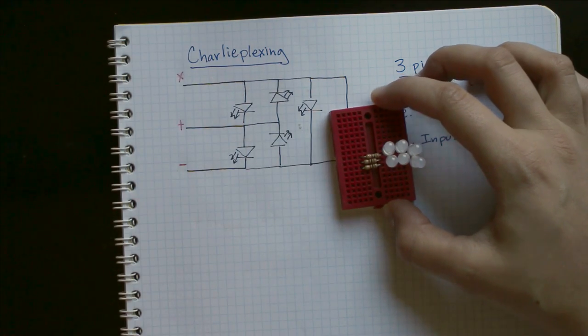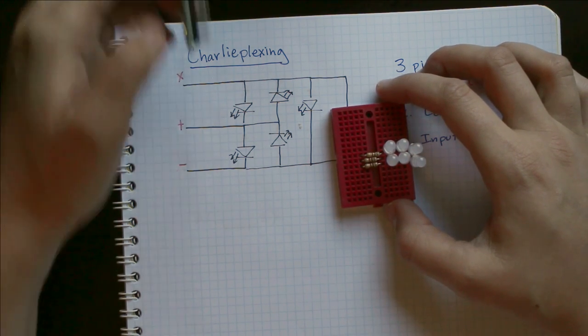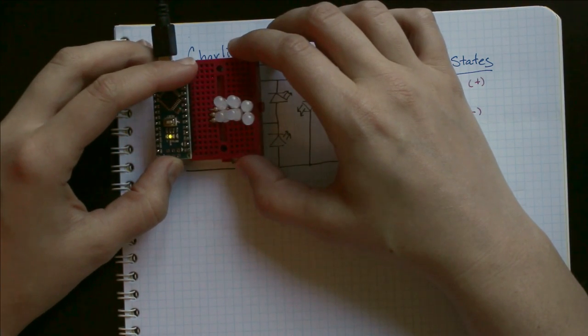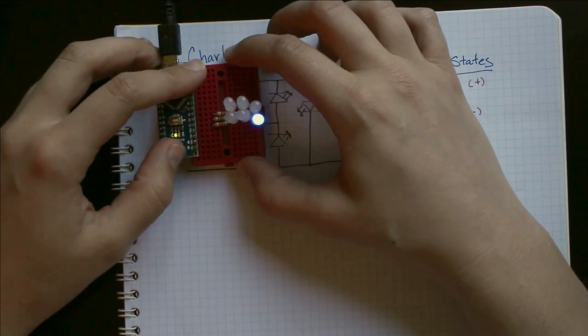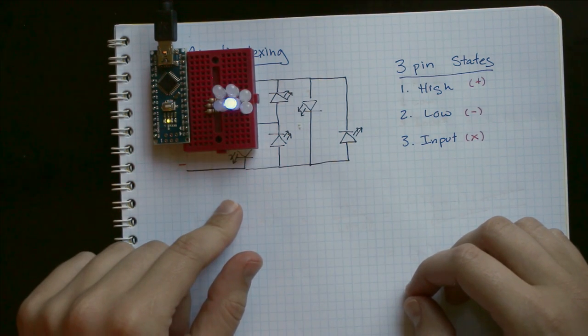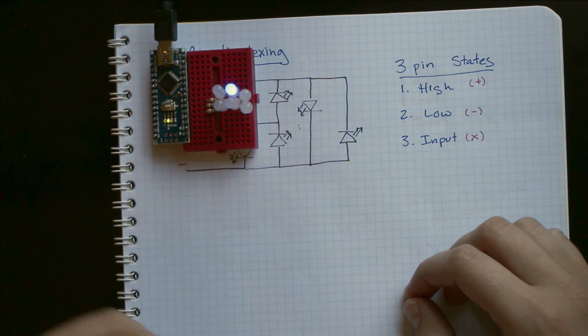And in order to further explain this, or demonstrate it, I actually programmed an Arduino to sequentially alternate which pin is high, which pin is low, and which pin is input. And so, over time, it turns on each individual LED.